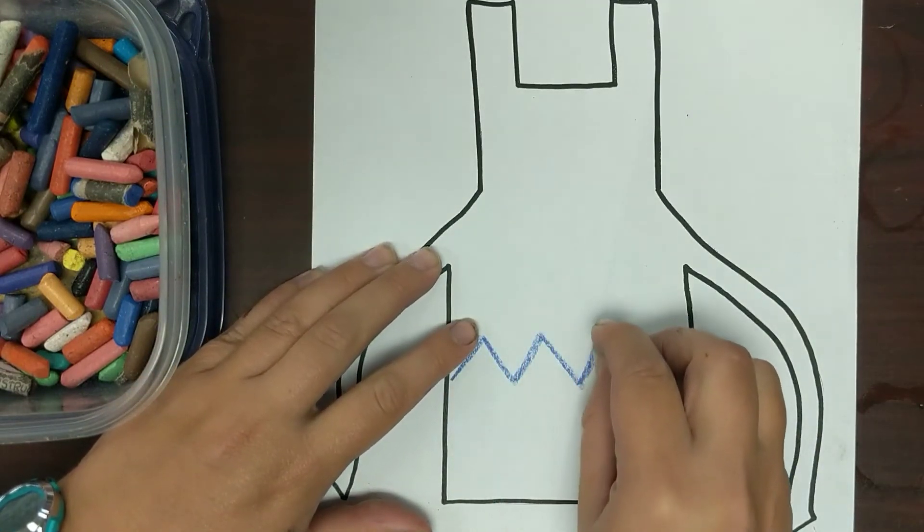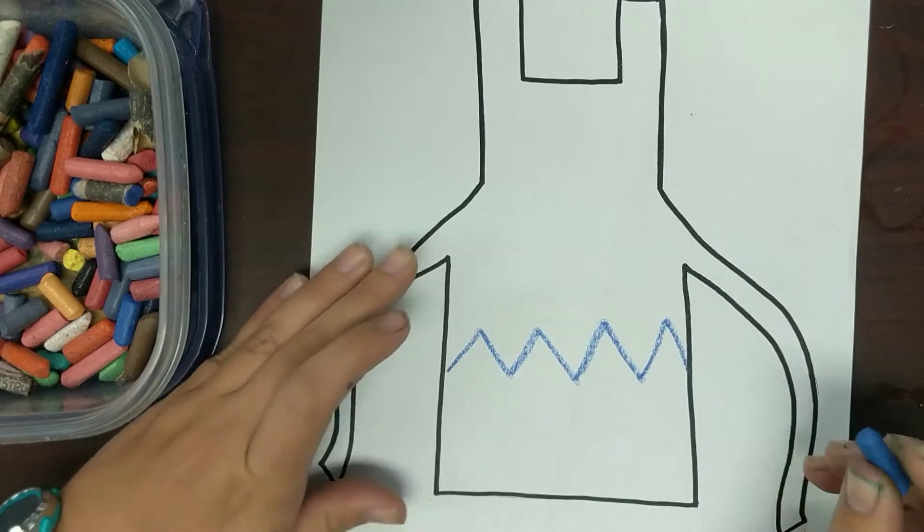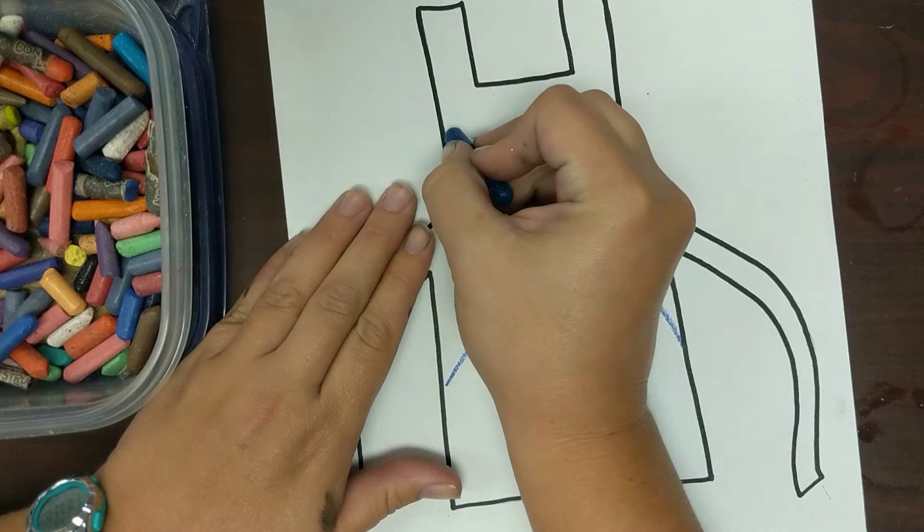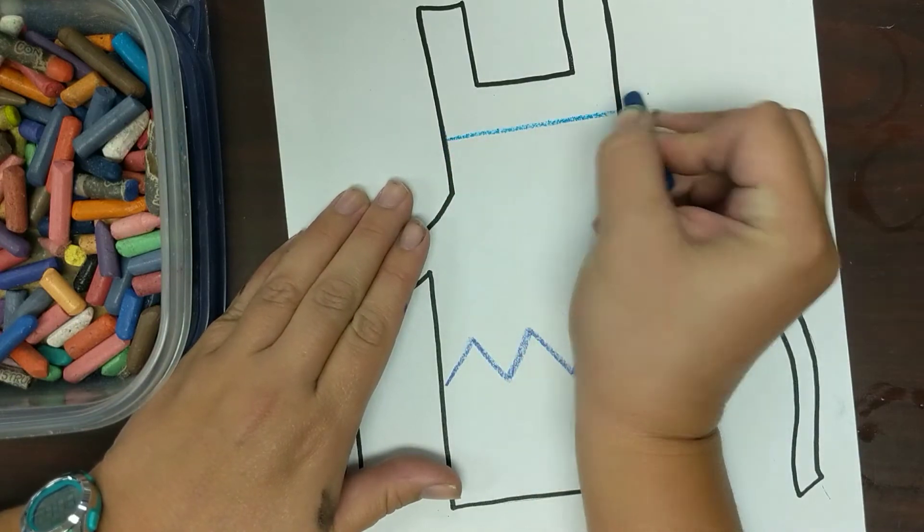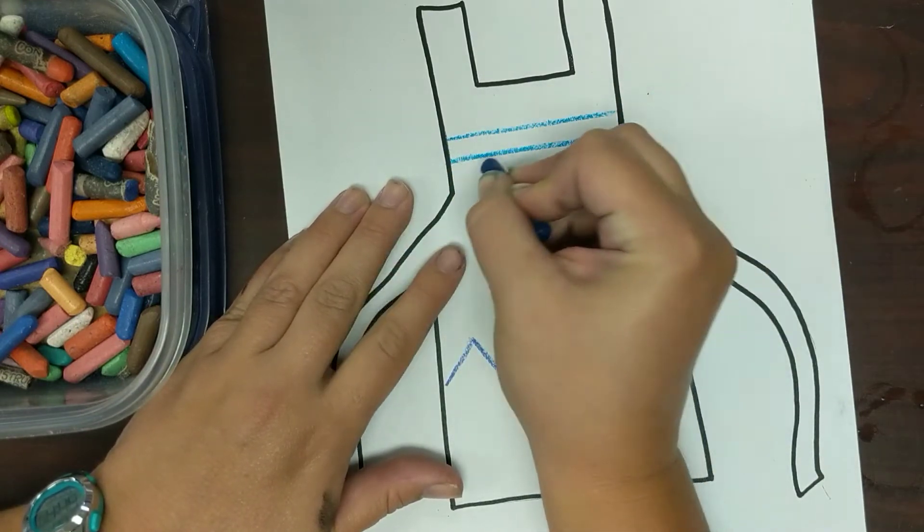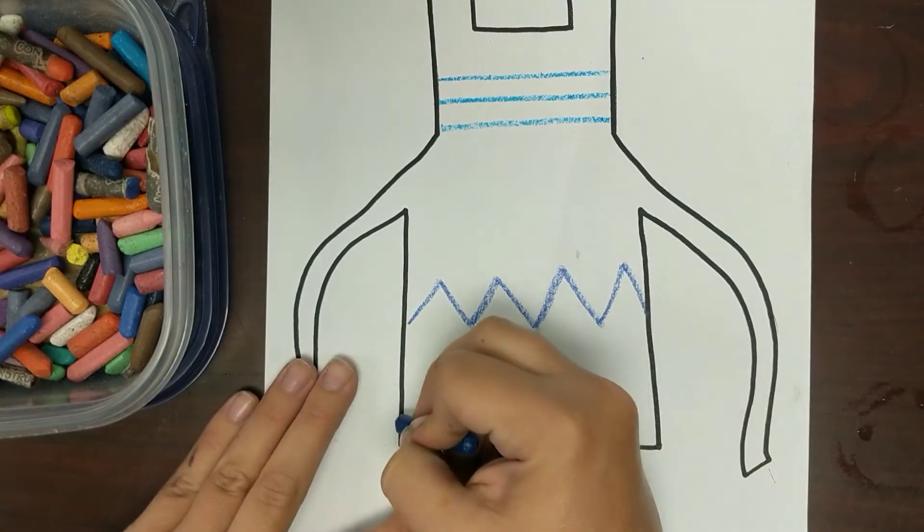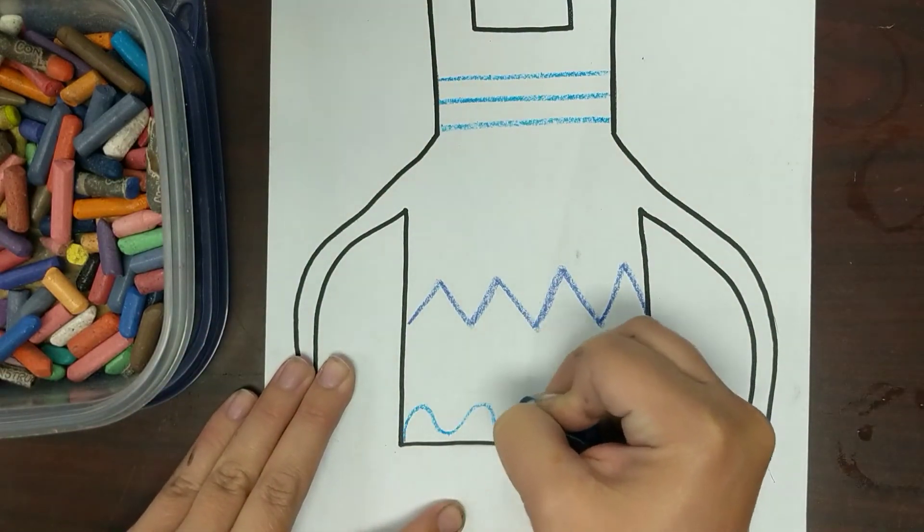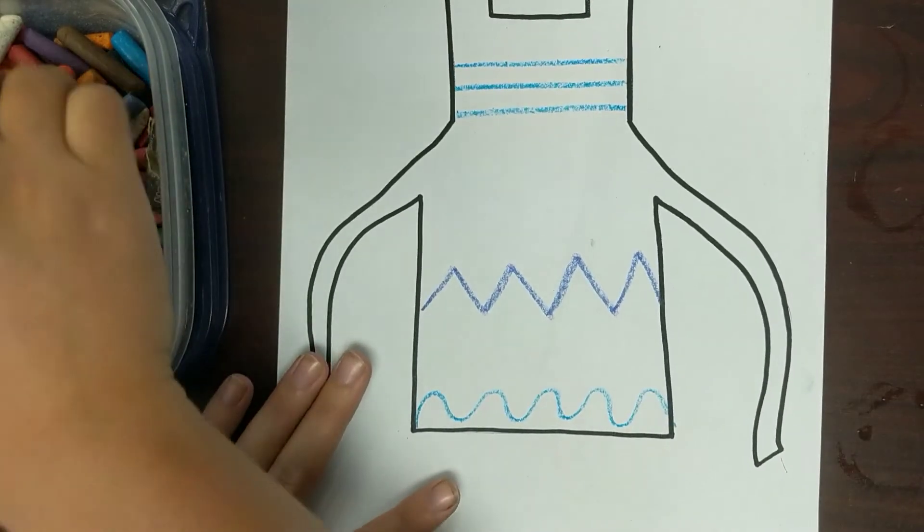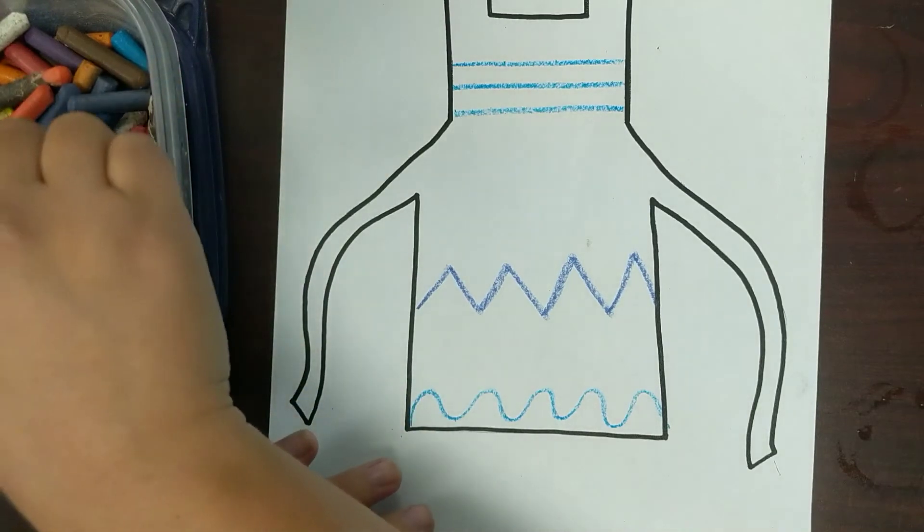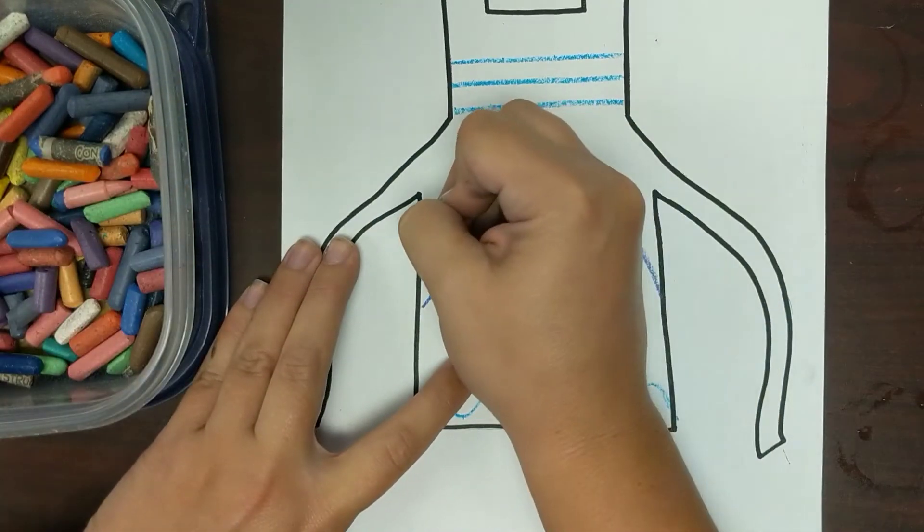Some zigzag lines that go up and down like this—or sorry, on our apron. You can do a straight line like this. You can do however many of those you want. I'm going to do three right there. You can do a wavy line like that. You can do, let's see, let's get a pink, you can do...